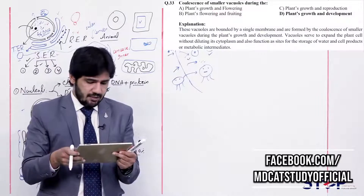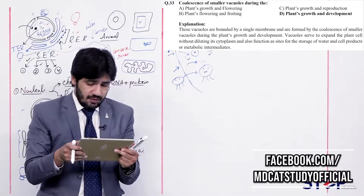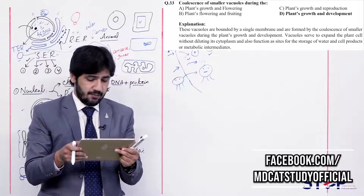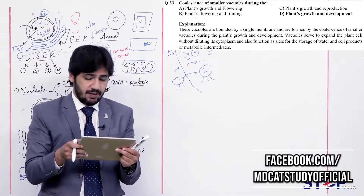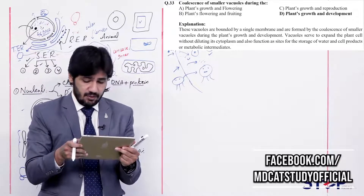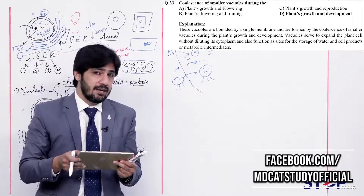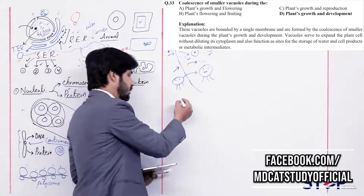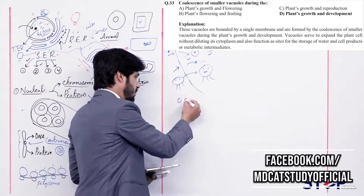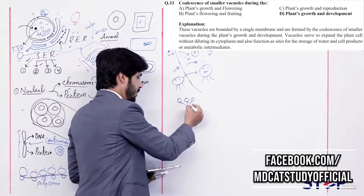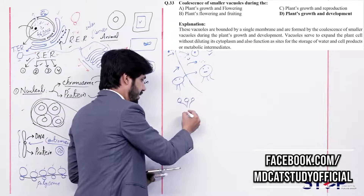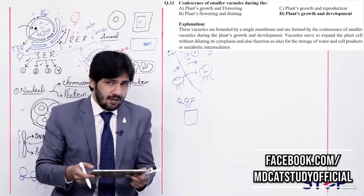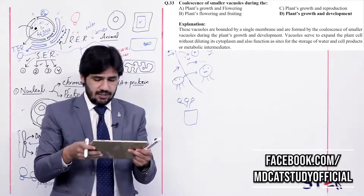Question 33: Coalescence of smaller vacuoles occurs during (alpha) plant growth and flowering, (beta) plant flowering and fruiting, (charlie) plant growth and reproduction, (delta) plant growth and development. The process where smaller vacuoles coalesce to form large vacuoles occurs during plant growth and development. So the right answer is delta.